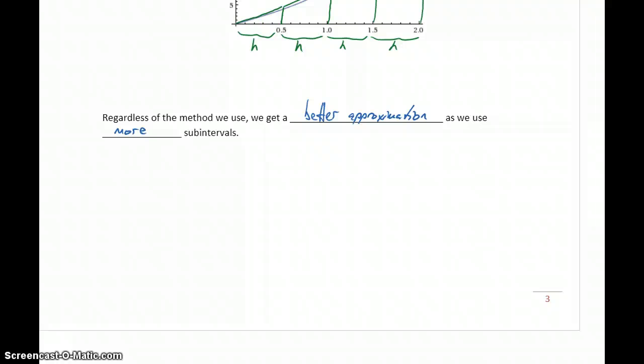We're taking length 1 times width 1. For instance, the rectangular method - we're looking at the length of that first rectangle times its width.